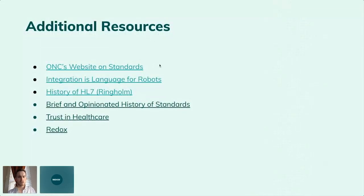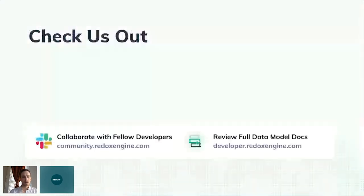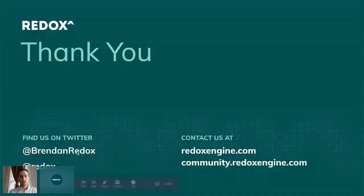There are additional resources to point out. ONC's website on standards is nice as a primer. There's a further comparison of language and standards, a cool history of HL7 by Ring Home with interviews and all sorts of things. If you want the deeper history, there's a writeup PDF about the history of standards and trust frameworks in healthcare. You can join our developer community at community.redoxengine.com, check out our API docs at developer.redoxengine.com, and find me on Twitter.